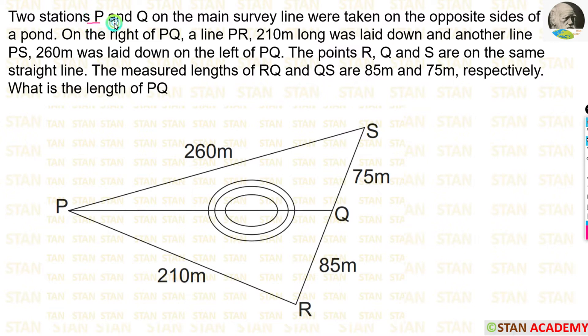Two stations P and Q on the main survey line were taken on the opposite sides of a pond. So this is the pond. On the opposite sides of the pond, two stations are made P and Q.